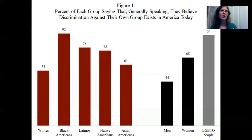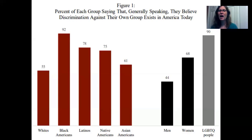For whites, they had to submit 10 resumes to get a callback. For African Americans, they had to submit 15 resumes — essentially a 50% difference in callbacks. We see really widespread discrimination in the workplace, in schooling, and in housing. There are a variety of ways individuals are still being discriminated against, and you'll be watching a video that discusses that in more detail.